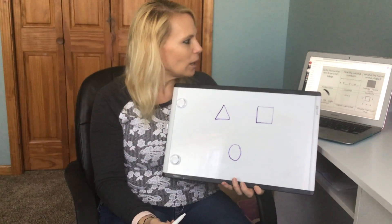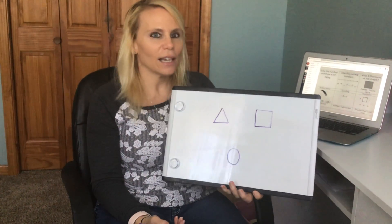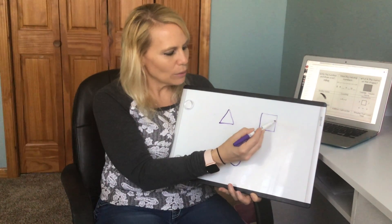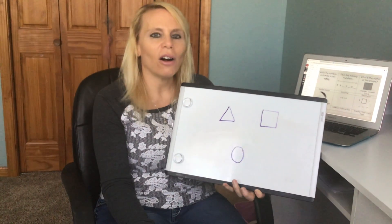Then the second one says square. Your second choice is a square. A square has one, two, three, four sides and they're all equal.